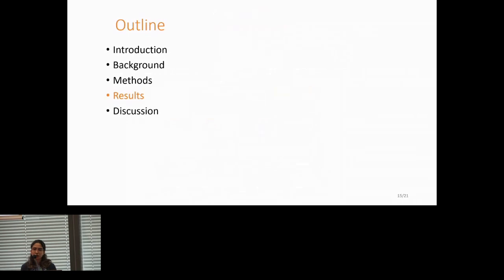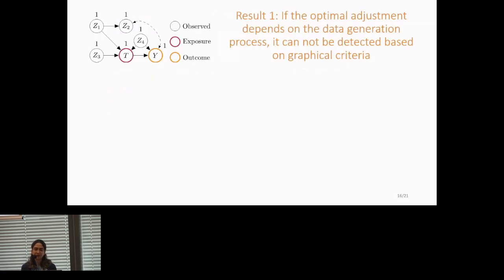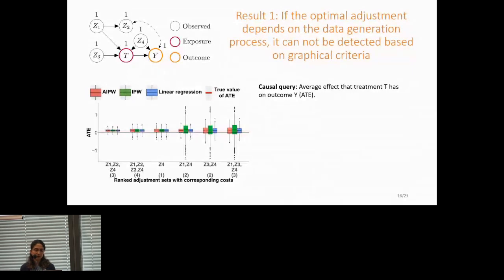Now let's see how this approach works in practice. Let's take a look at some biological case studies. The first case study is a simple case where we have a treatment T and an outcome Y. The goal here is to find the average effect that the treatment has on the outcome. This is a synthetic case study, so we know that the true value of average treatment effect is positive. So in other words, the treatment has a positive effect on the outcome. We use different estimators for estimating the average treatment effect, and I will not go into details of these estimators. The output is these box plots. The x-axis shows the ranked adjustment sets, and the numbers below the adjustment sets are the costs associated with them. The optimal adjustment set in this case is Z1, Z2, Z4. We took the same example and just changed the data generation process.